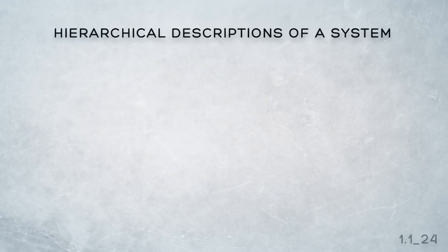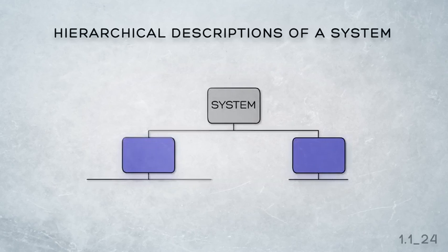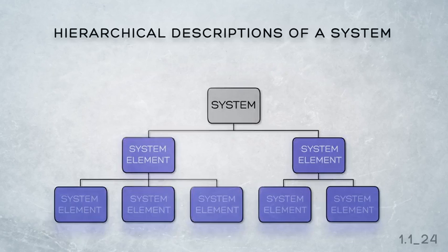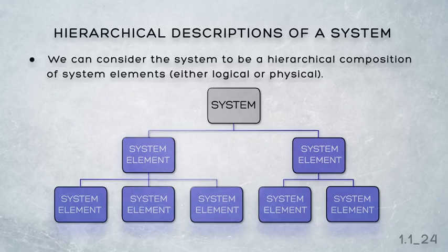We saw earlier that a system can be defined as the combination of system elements which interact to achieve a defined mission. Since each of these system elements will need to perform functions that have been allocated to it so it can contribute to the system's mission, we can consider a system to be a hierarchical composition of system elements.